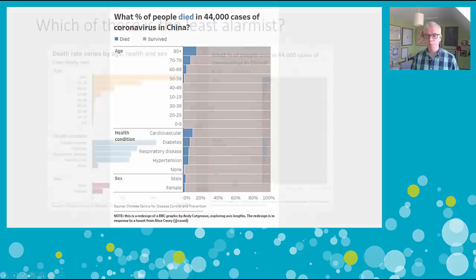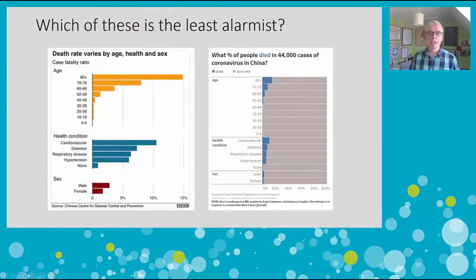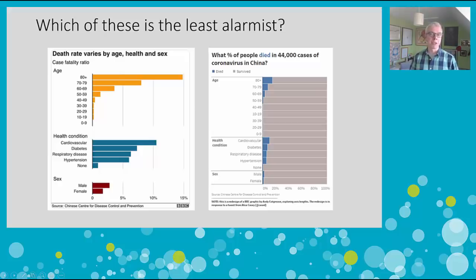Alice raised the tweet suggesting that the original chart was a bit alarmist. It's not a mistake to visualize data like this, but if we wanted to be as least alarmist as possible, maybe we could think about visualizing the same data in the way shown on the right. I'd like to thank Alice for the tweet — I thought this was an interesting exercise. I just hope that as data communicators we can continue to do our best to spread news in a calm, collected, and realistic way, showing all the data so people can make their own conclusions. Take care.